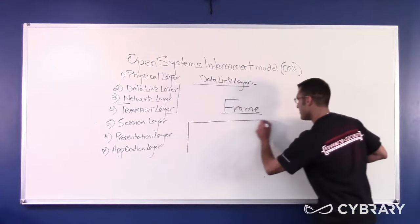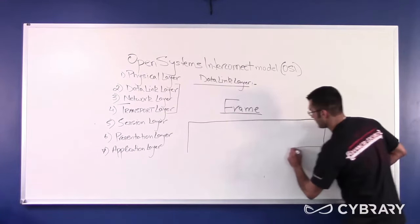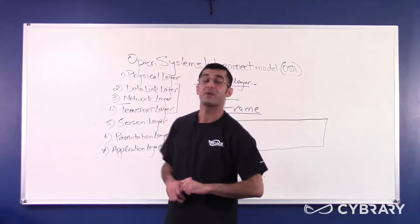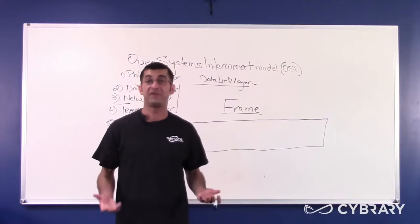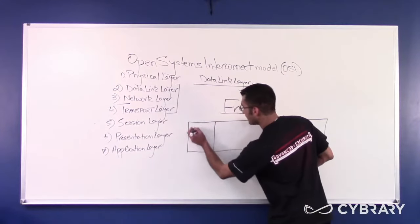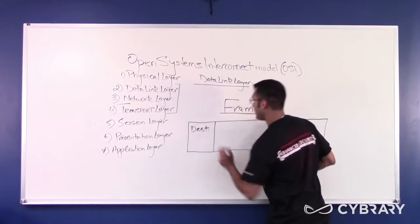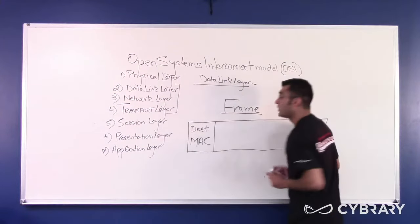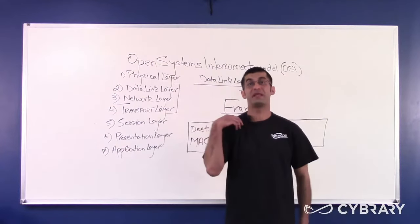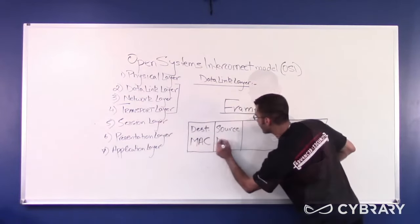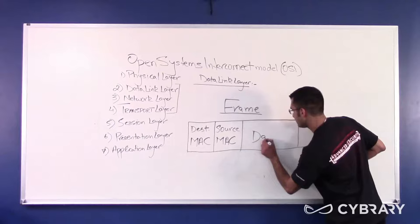I'm just going to draw a box, with a word of warning: I'm only going to put the fields in this frame that are pertinent to the CCNA class. There are other fields inside of this frame, but you don't need to know them until you get to your CCNPs. So you will have your destination MAC — your destination MAC address, which would be the MAC address of the device you are transmitting to, or the person you are sending the letter to — your source MAC, and your actual data.